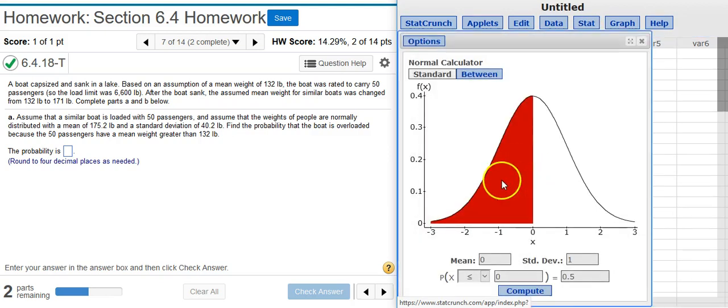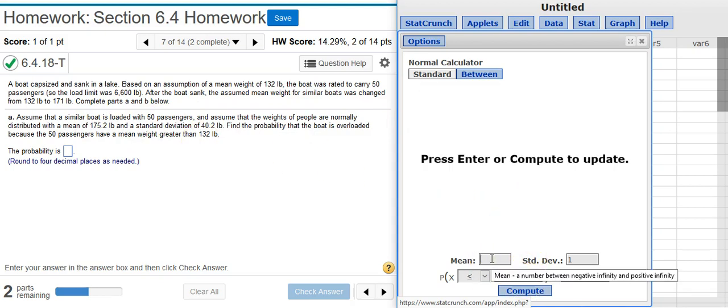Here's my normal calculator. I'm going to put in the distribution for the weights that are given here. So, the mean is 175.2. And then the standard deviation here, it says in the problem statement, is 40.2. But, we've got more than one person on the boat. So, therefore, we have to do an adjustment to our standard deviation.